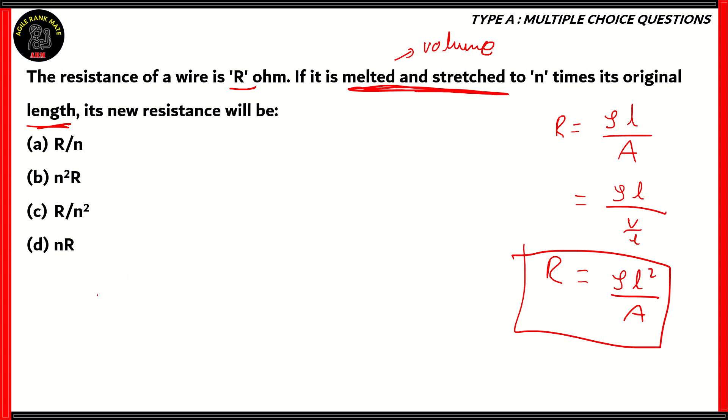Now, the resistance of the first wire, R1, is R ohms. We will consider its length as L. Now, for the new wire, we will find out the resistance and the length given is N times the original length. So, N times L.